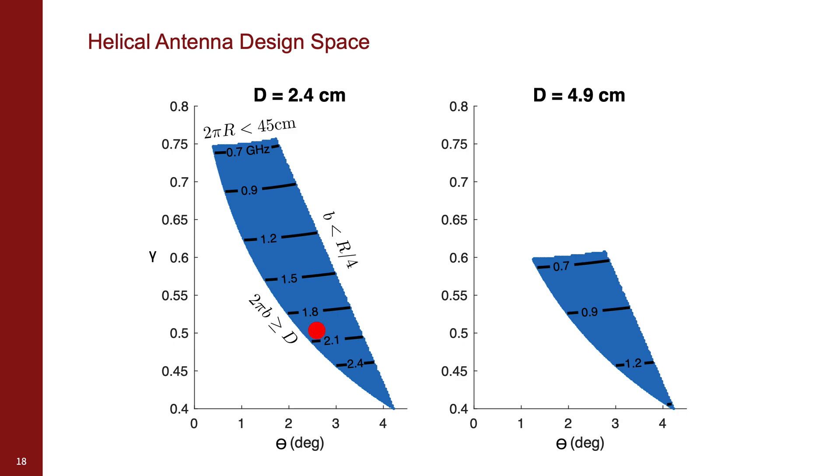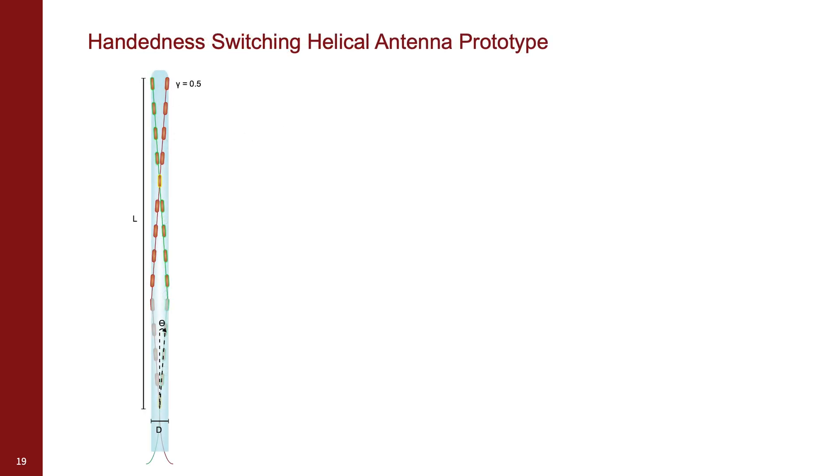In our prototype, we choose a tendon angle of 2.5 degrees and a spacing ratio of 0.5. Using these parameters, we construct a soft robot antenna as outlined in the figure, with identical tendons spiraled in opposite directions and crossing at two points.